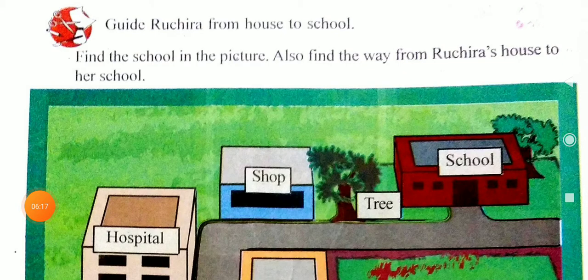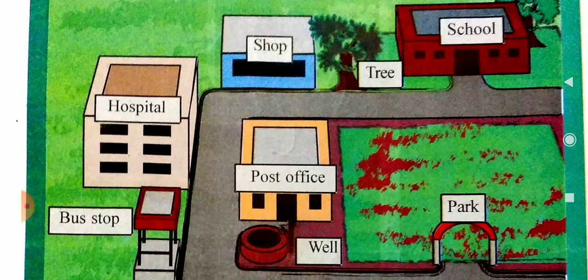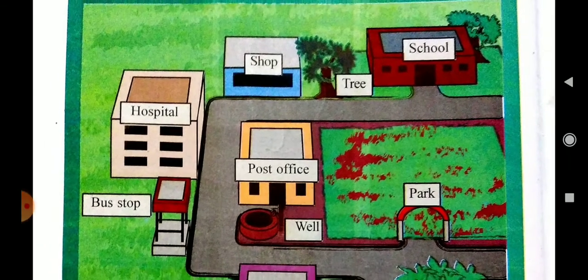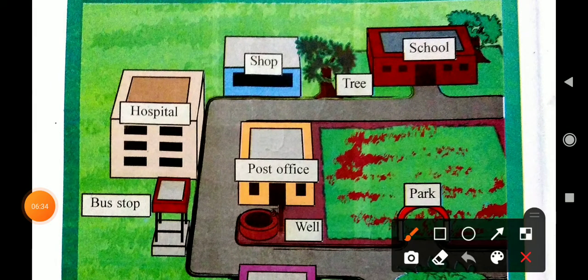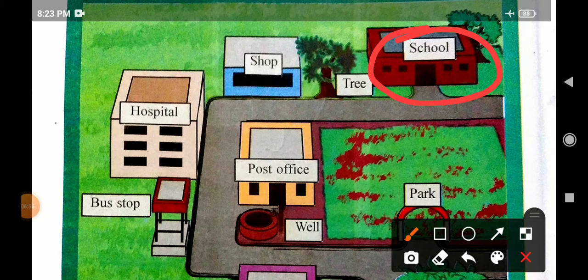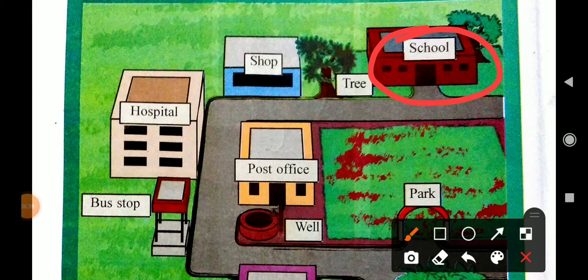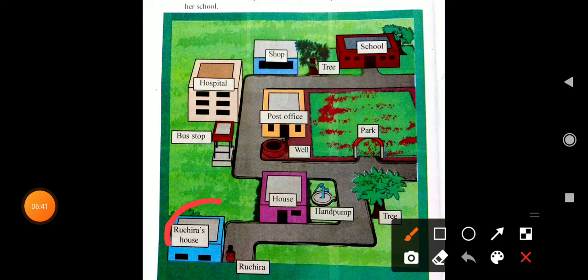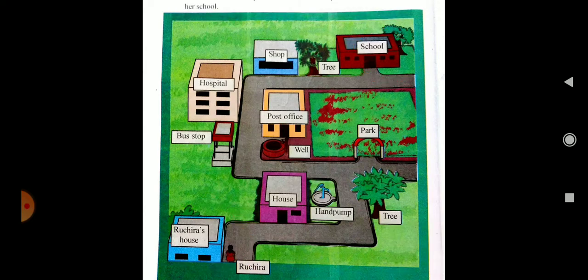Guide Ruchira from house to school. Find the school in the picture and find the way from Ruchira's house to her school. First we have to find the school — you can see this is a picture of the school and this is Ruchira's house.